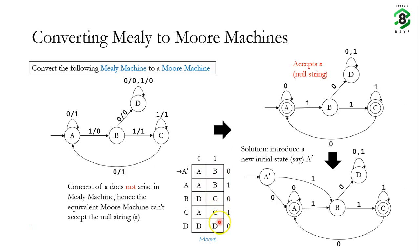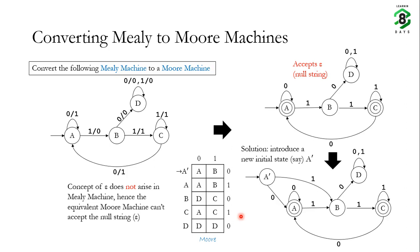Looking at the updated state transition table: in state A', input 0 goes to state A and input 1 goes to state B, with output 0 since A' is a non-final state. State A remains a final state with output 1, and state C is also a final state with output 1. States B and D are non-final states with output 0. In the next class, we will discuss one more example of converting Mealy machines to Moore machines. Thank you.